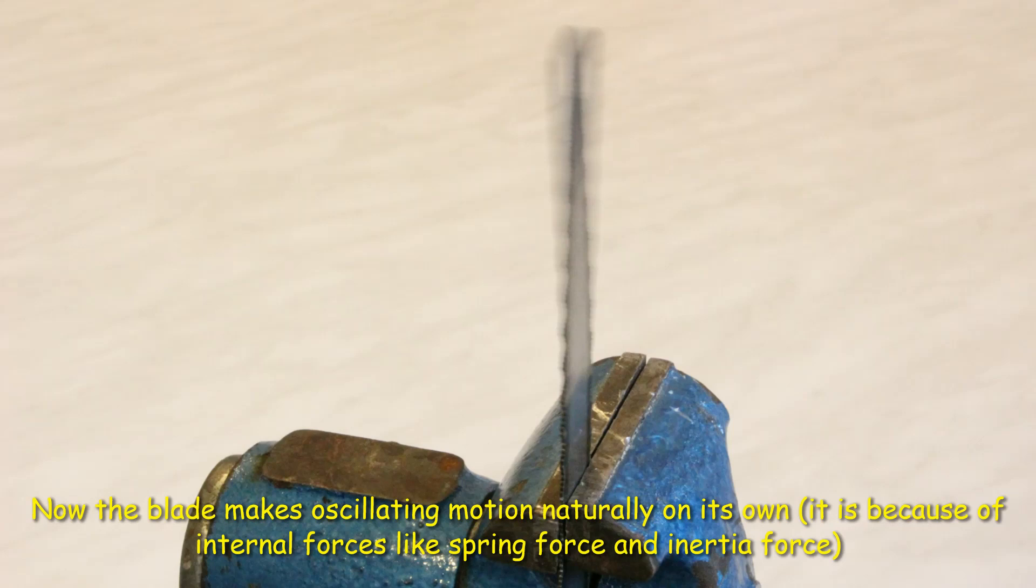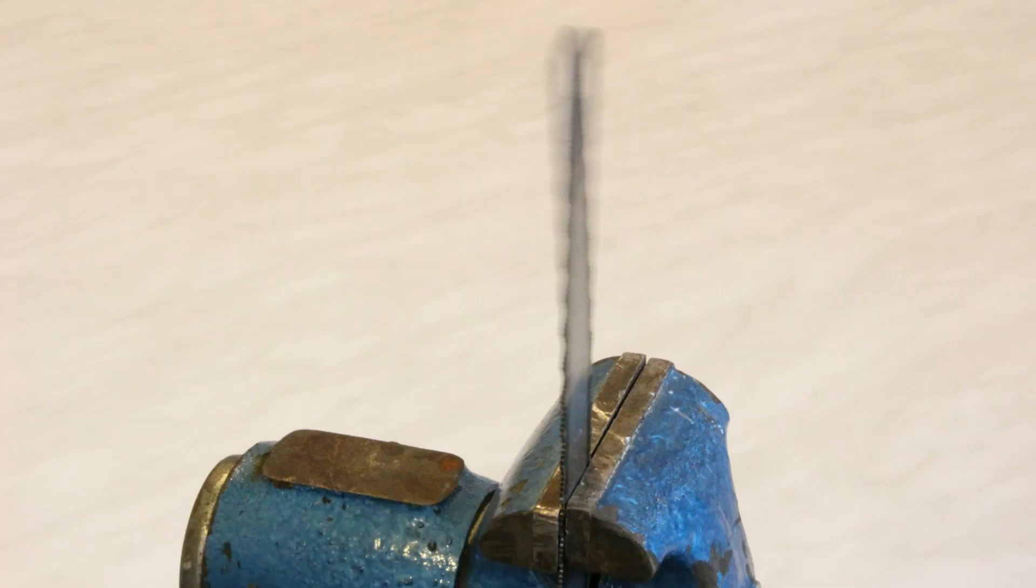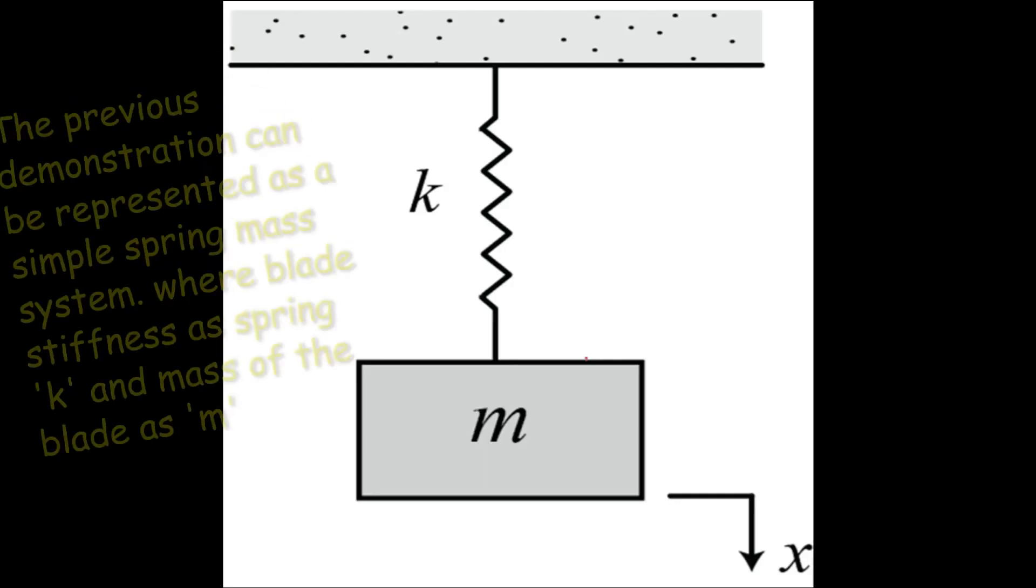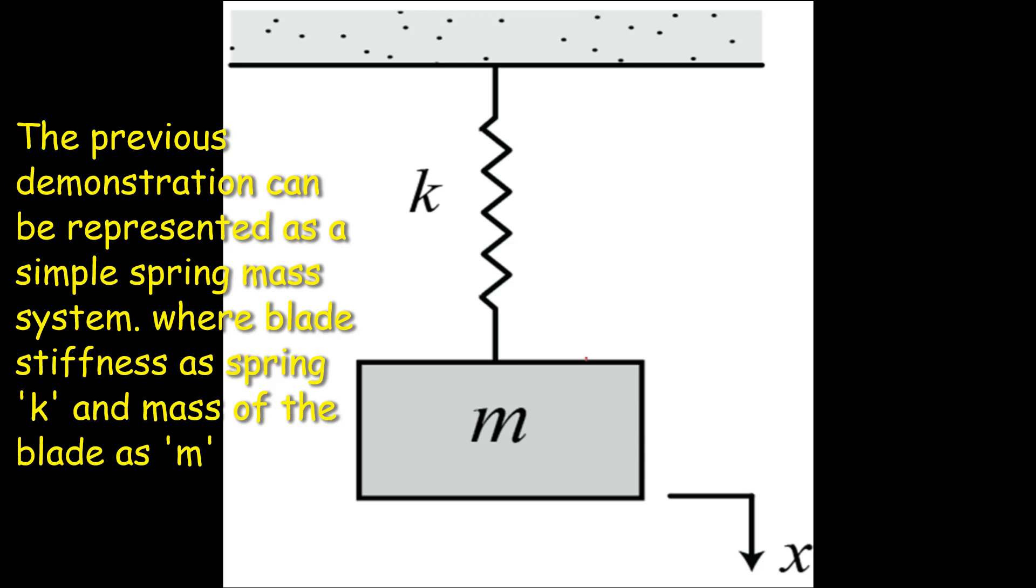The previous demonstration can be represented as a simple spring mass system, as shown here, where blade stiffness as spring with spring constant 'k' and mass of the blade as mass 'm'.